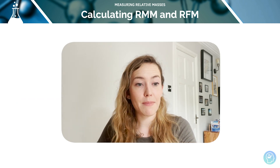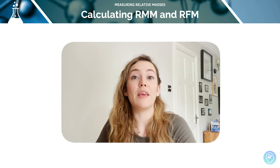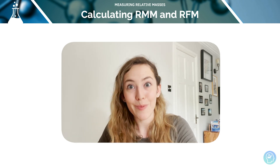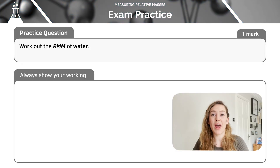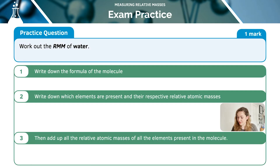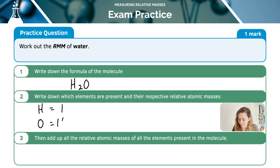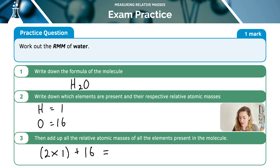To calculate the relative molecular mass or the relative formula mass, just add up the relative atomic masses of each atom within the molecule — you've done that quite a lot at GCSE. So for water: first get the formula, which is H₂O. Write down the elements present — H and O — and their relative atomic masses: H is 1 and O is 16. Then add them all together: we've got two H atoms, so two times 1 plus 16 gives us 18.